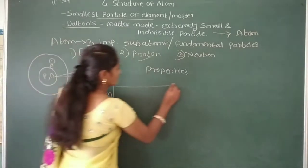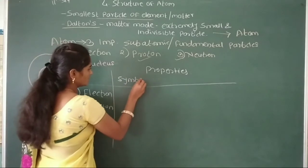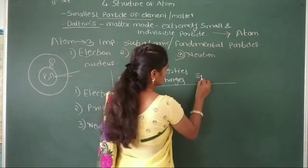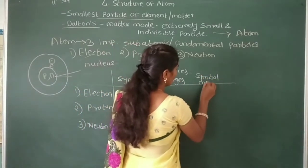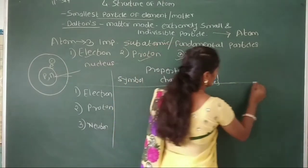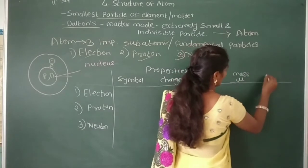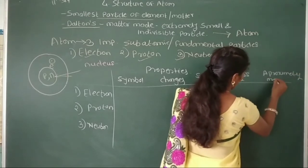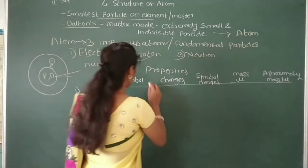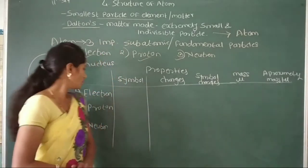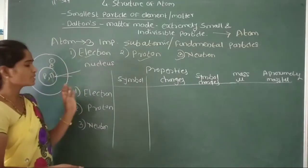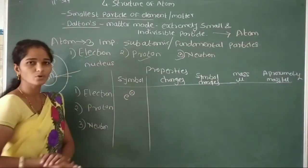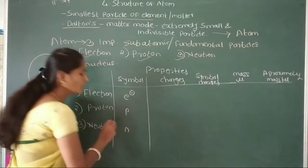Now, the symbols of these 3 sub-atomic particles: the symbol for electron is e⁻. The symbol for proton is P. And the symbol for neutron is N.